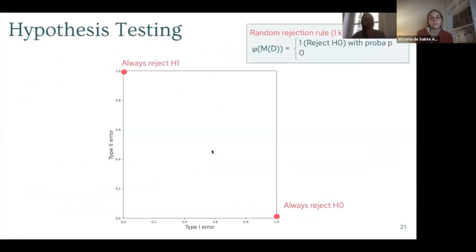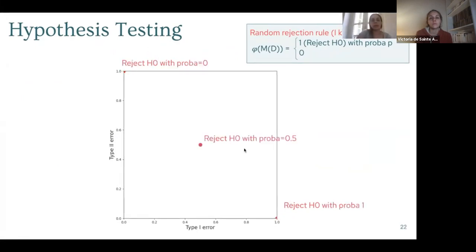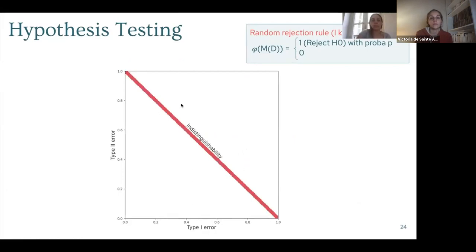In the case where you know nothing about the dataset, you may randomly guess whether or not Alice is in it. For example, if you always say she's not in the dataset, you make only type two errors. If you always say she is, you make only type one errors. When the probability varies, you get this indistinguishability line.